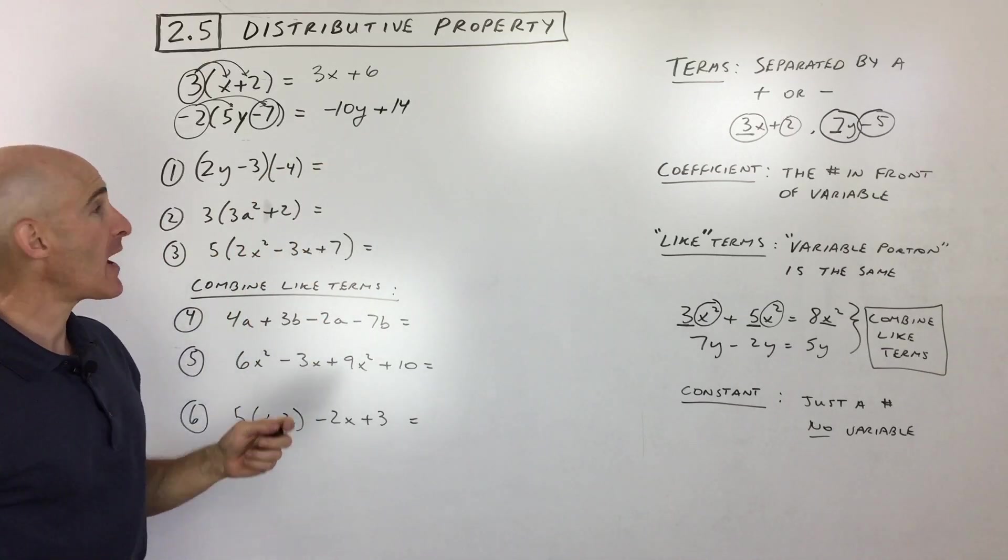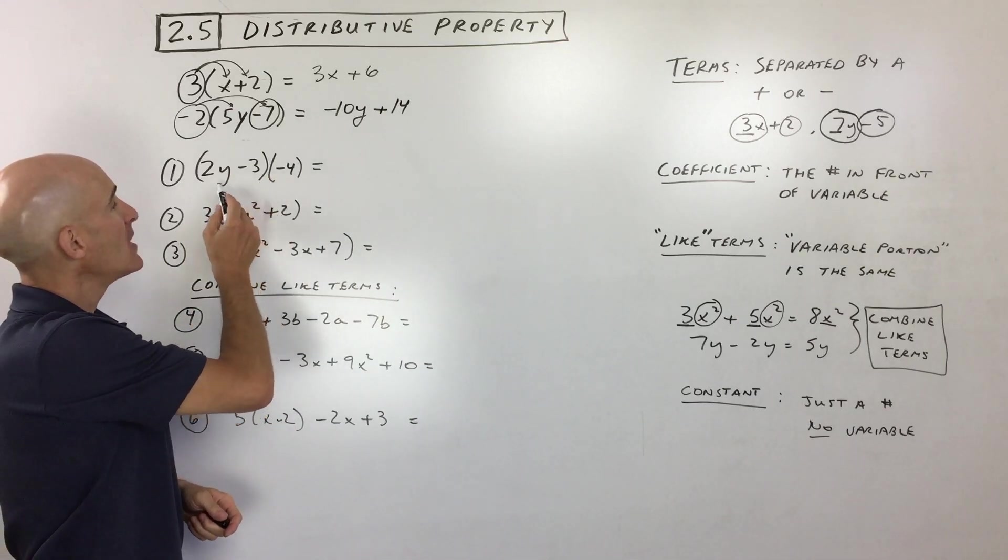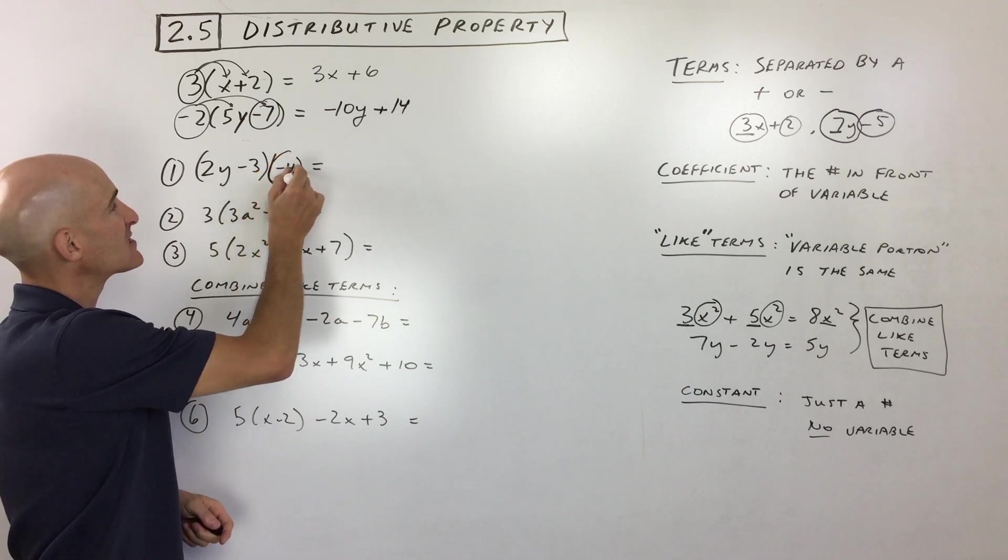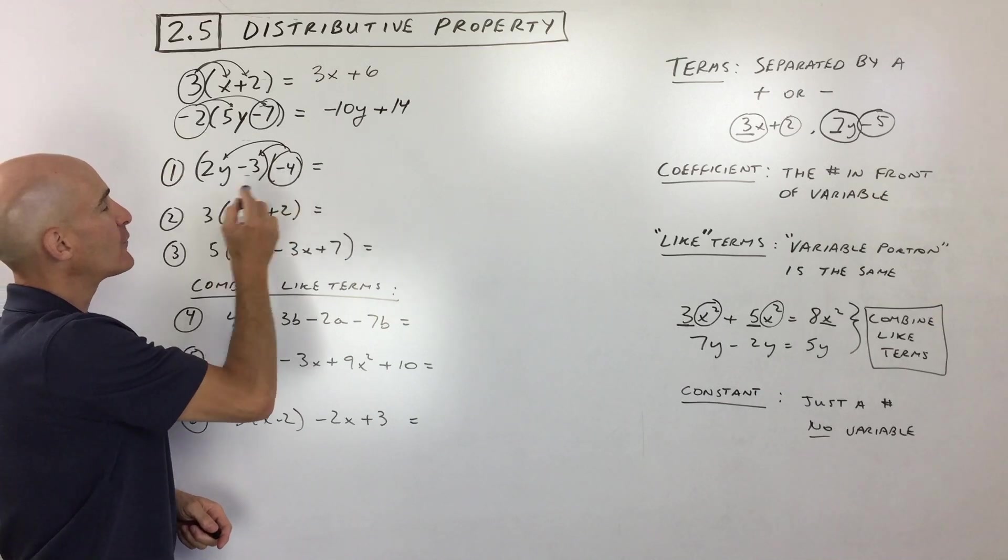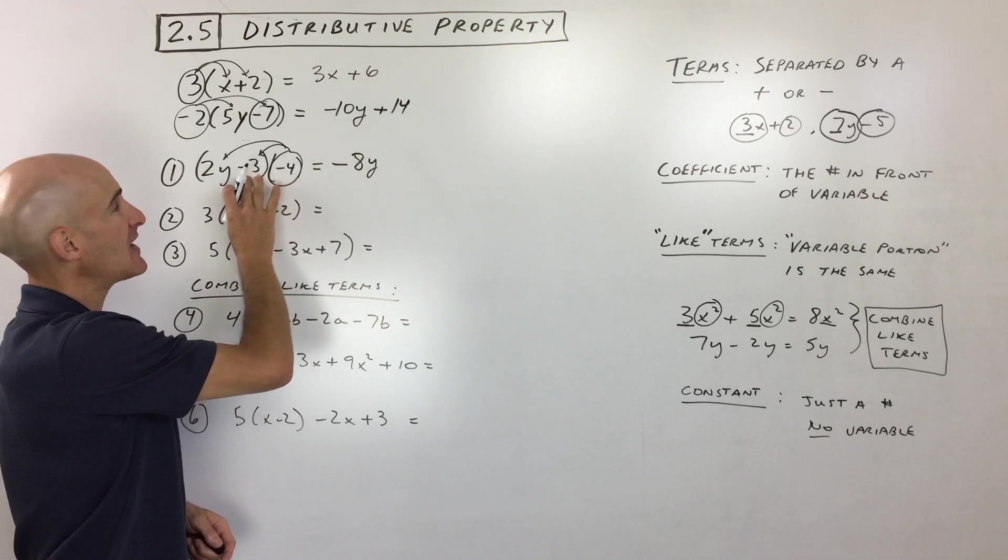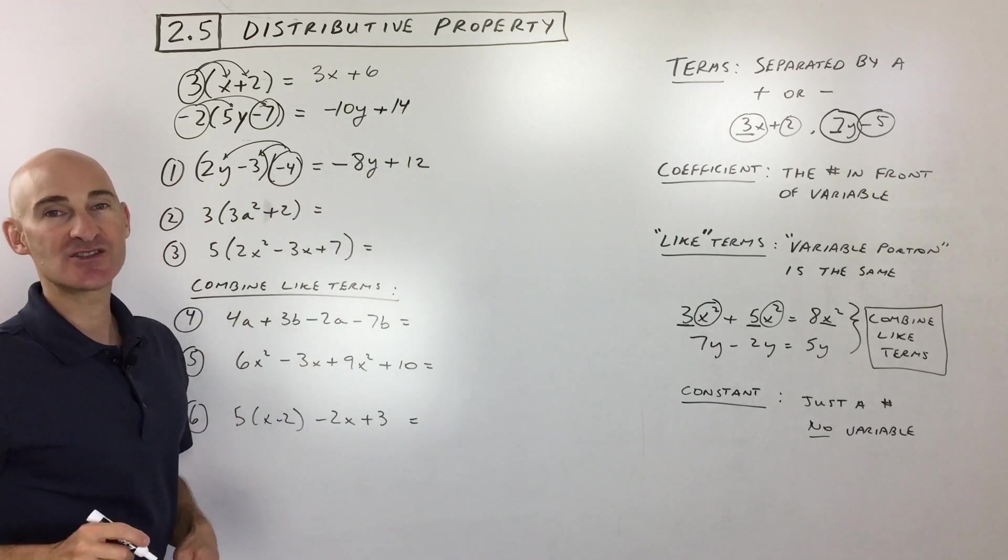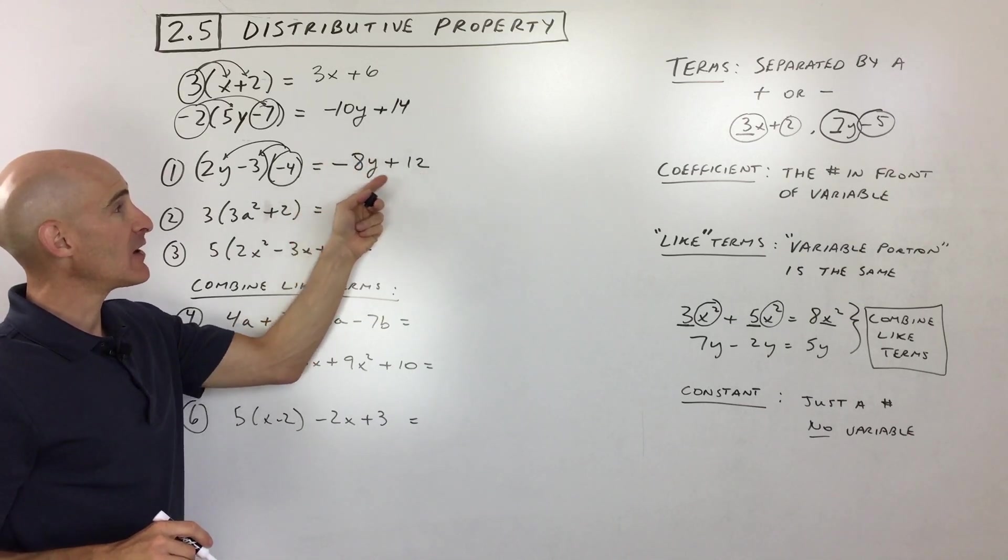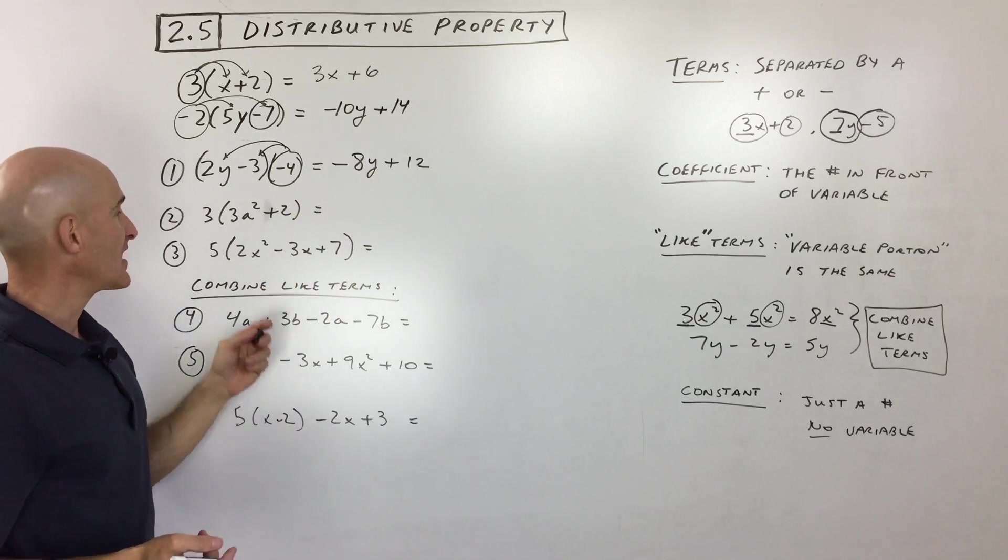See if you can pause the video, do them on your own to practice, but check your work with what we're going to show you right now. So 2y minus 3 is being multiplied by negative 4. So I'm going to take this negative 4. I'm going to distribute it into the parentheses. Negative 4 times 2y is negative 8y. Negative 4 times negative 3. See the minus 3, negative 3, positive 12. And that's our answer. Negative 8 is the coefficient. 12 is the constant term. Negative 8y, that's a variable term, right? And you got it. So that's the idea.